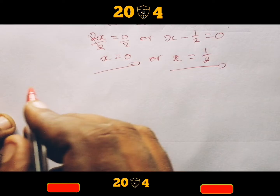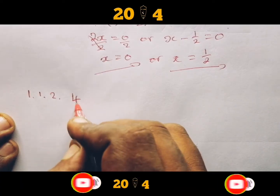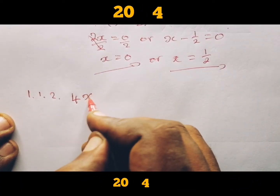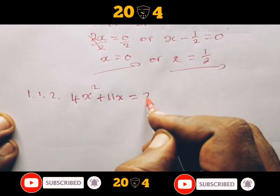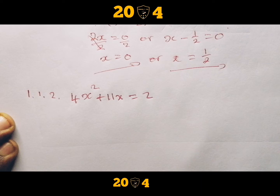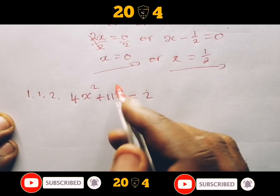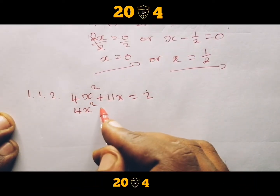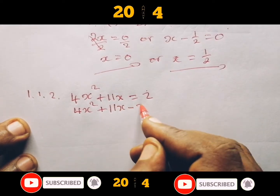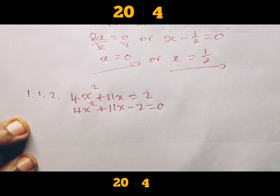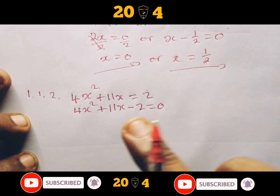Now we have 1.1.2. We are given 4X squared plus 11X equal to 2. Remember we are doing quadratic standard form in grade 11. You take the 2 to the other side, so you have 4X squared plus 11X minus 2 equal to zero. When they say 'correct to two decimal places', they will put it in brackets next to the problem.